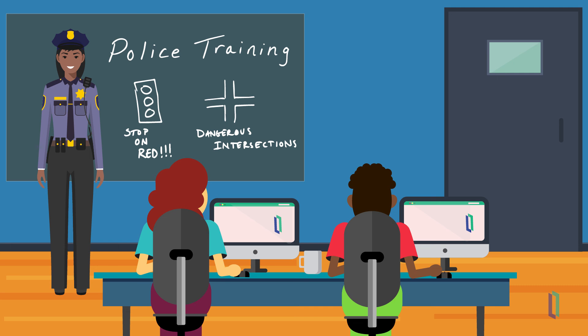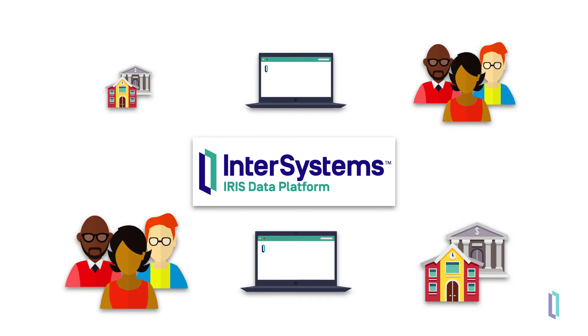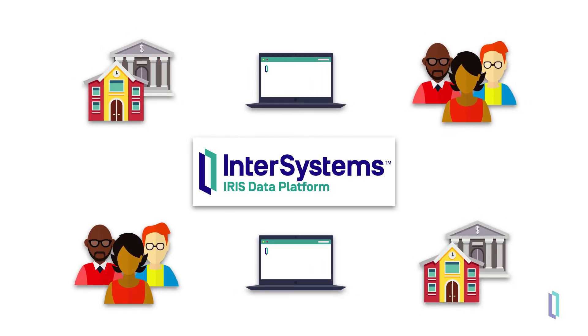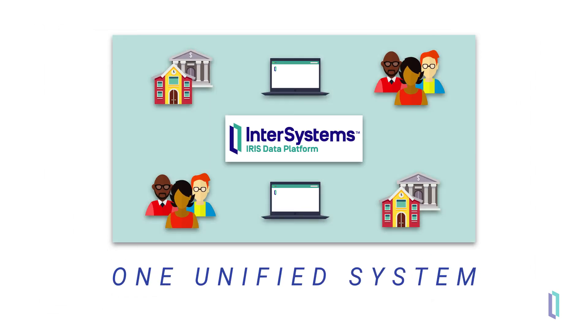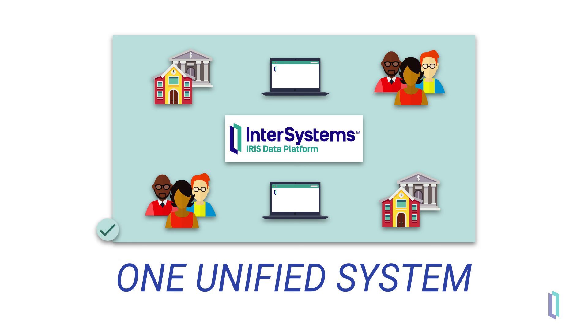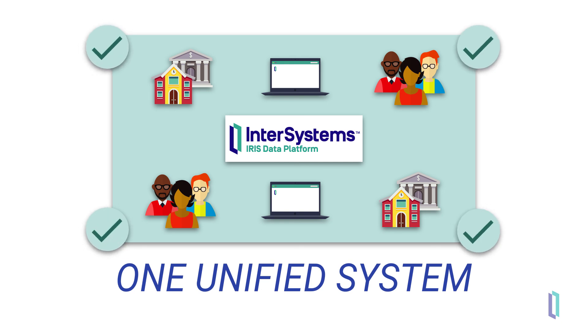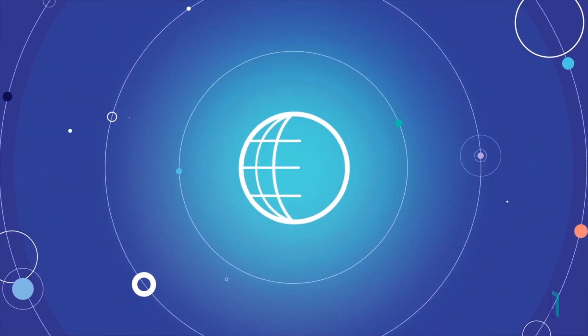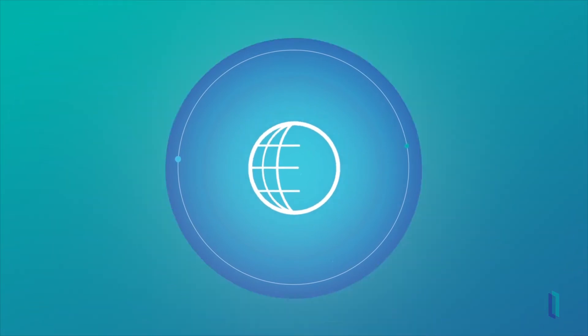Whatever your application, you now have the power to act on all the data you collect. With InterSystems IRIS, your separate systems can easily be unified using interoperability tools, allowing you to make decisions on all the data you collect, reduce duplication of data by sharing it between multiple systems, and help your people, processes, and applications work as efficiently and effectively as possible.